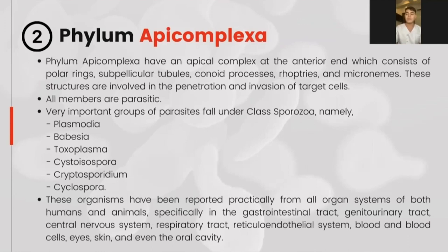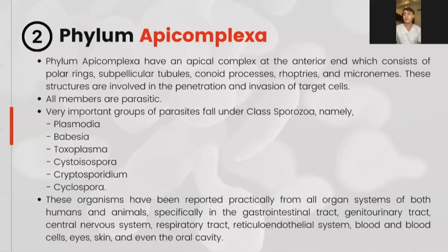Phylum Apicomplexa have an apical complex at the anterior end which consists of polar rings, subpellicular tubules, conoid processes, rhoptries, and micronemes. These structures are involved in penetrating and invading target cells. All members of phylum Apicomplexa are parasitic; very important groups fall under class Sporozoa, namely Plasmodium, Babesia, Toxoplasma, Cytoisospora, Cryptosporidium, and Cyclospora. These organisms have been reported practically from all organs of both animals and humans, specifically in the gastrointestinal tract, genitourinary tract, central nervous system, respiratory tract, reticuloendothelial system, blood and blood cells, eyes, skin, and even the oral cavity.